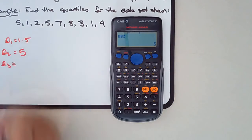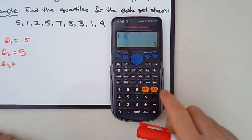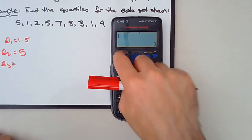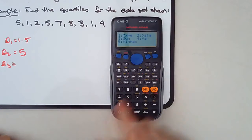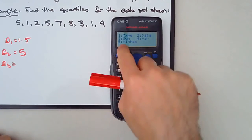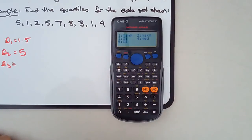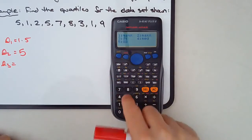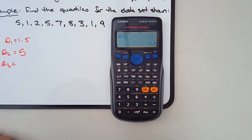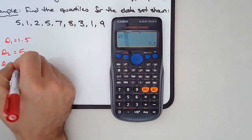And Q3. Press AC, Shift, 1. Min-max, number 5, Q3. And we get 7.5.